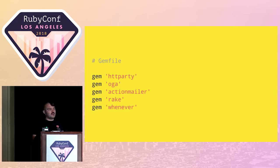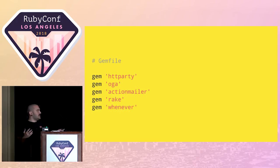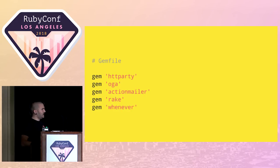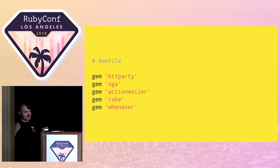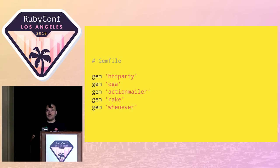The technical background of the bot was really simple. I used a couple of gems: HTTParty to fetch the content of the web page, the Oga gem which is an HTML parser similar to Nokogiri, ActionMailer to shoot myself an email, and I wrapped it all in a Rake task invoked with the Whenever gem. The script ran on my local computer, and that was good enough for me.